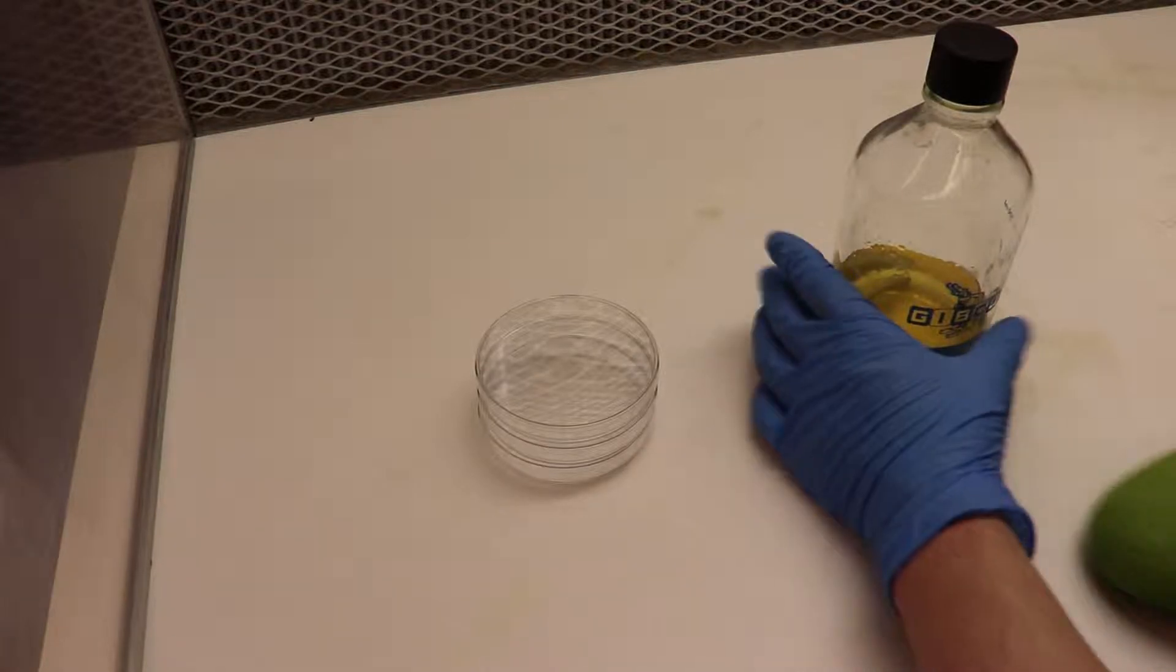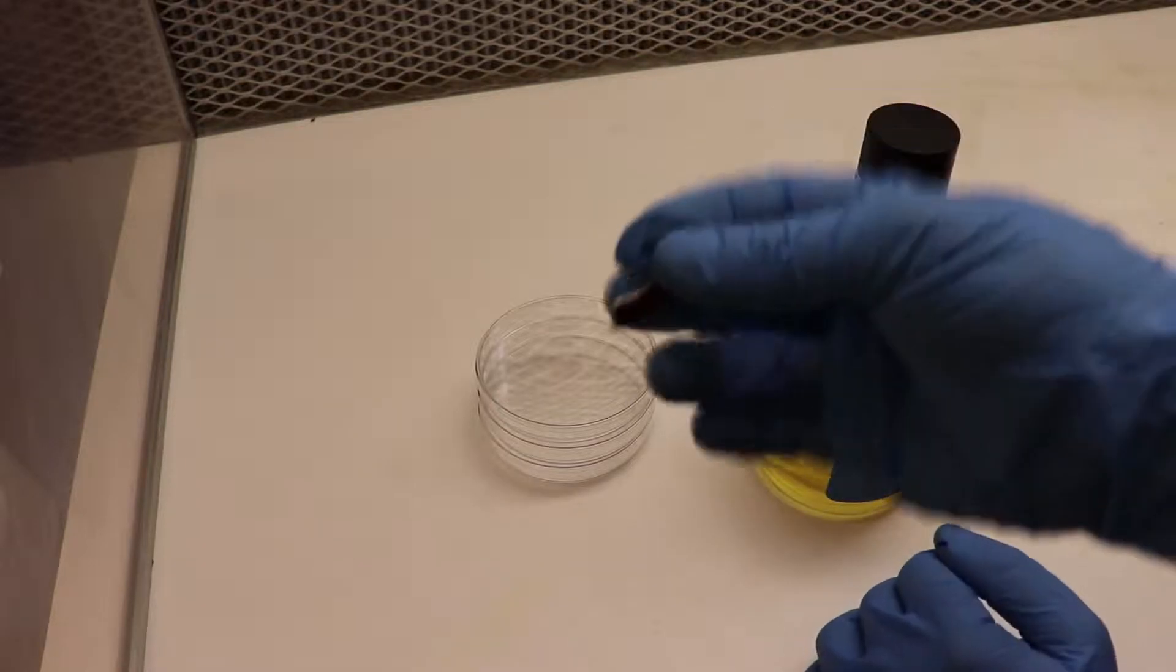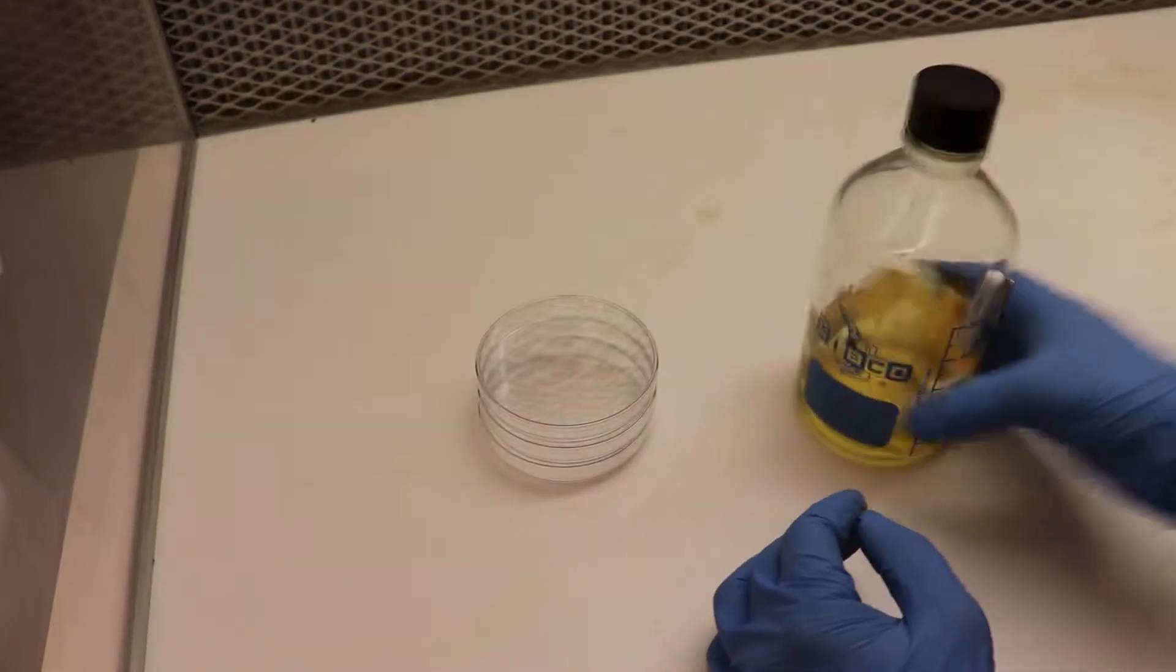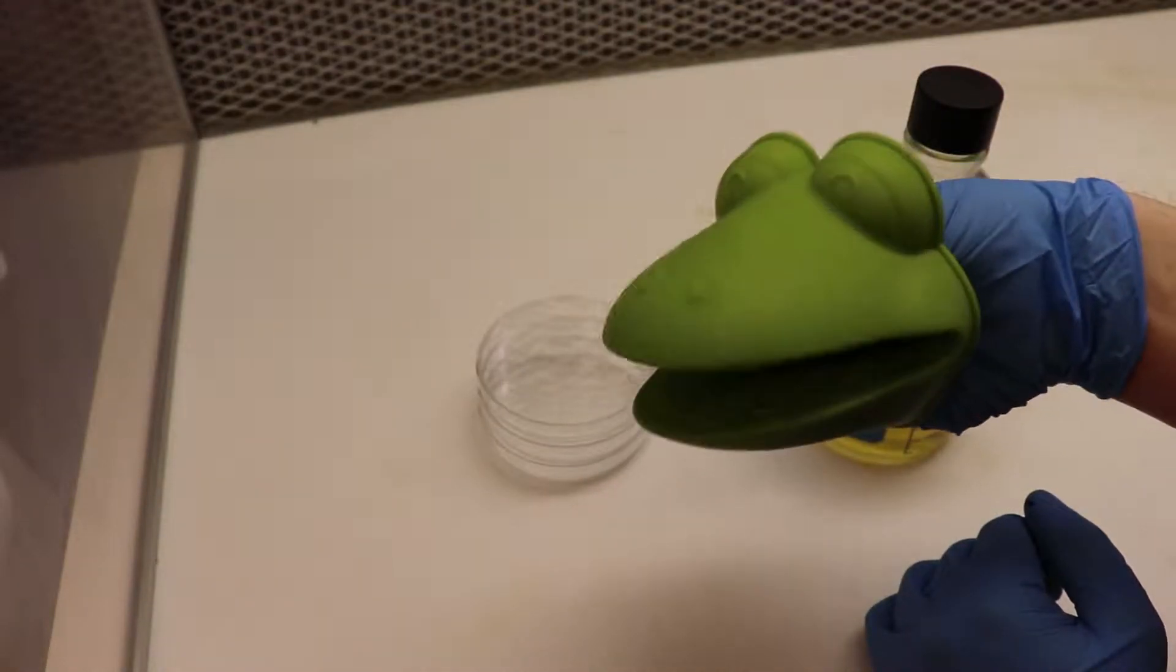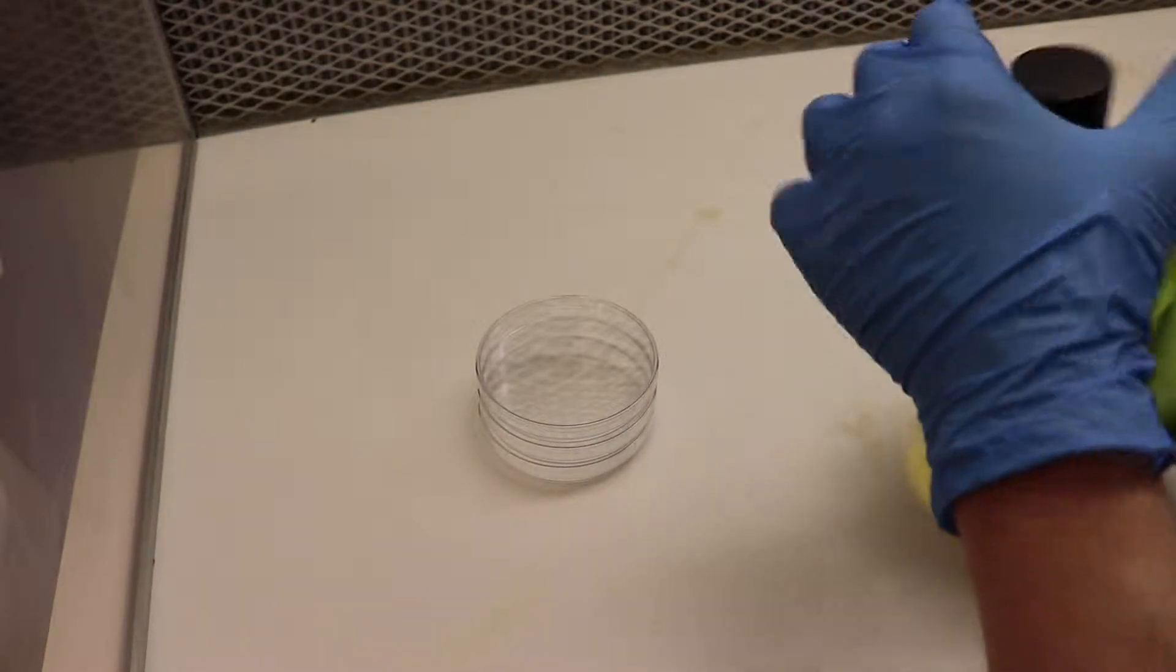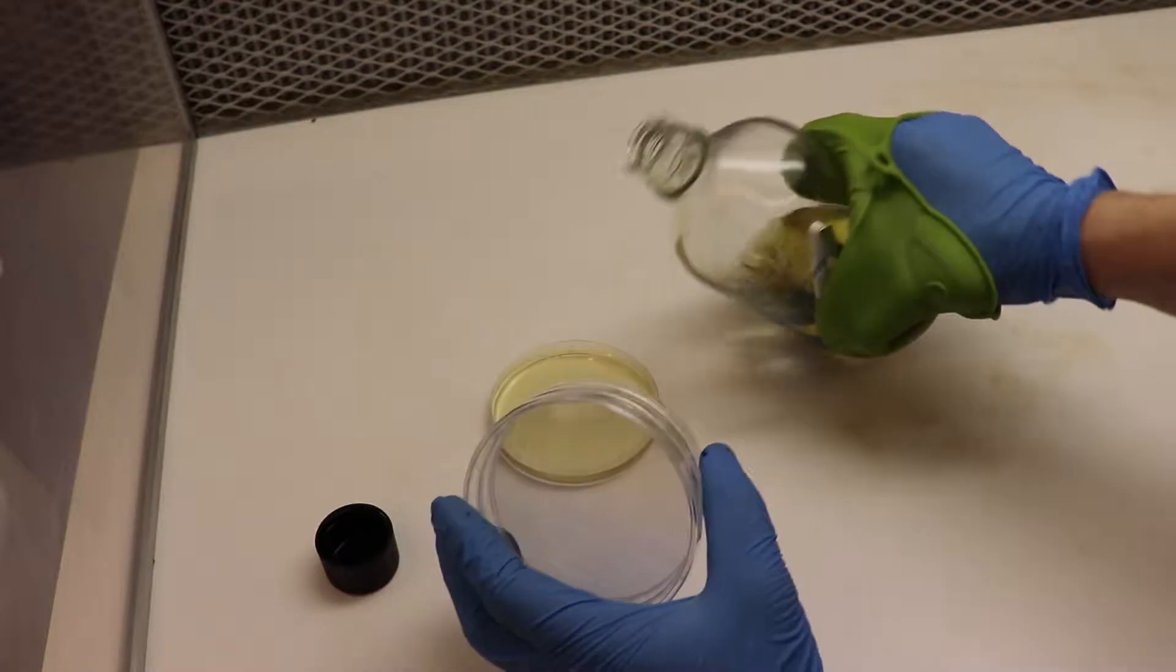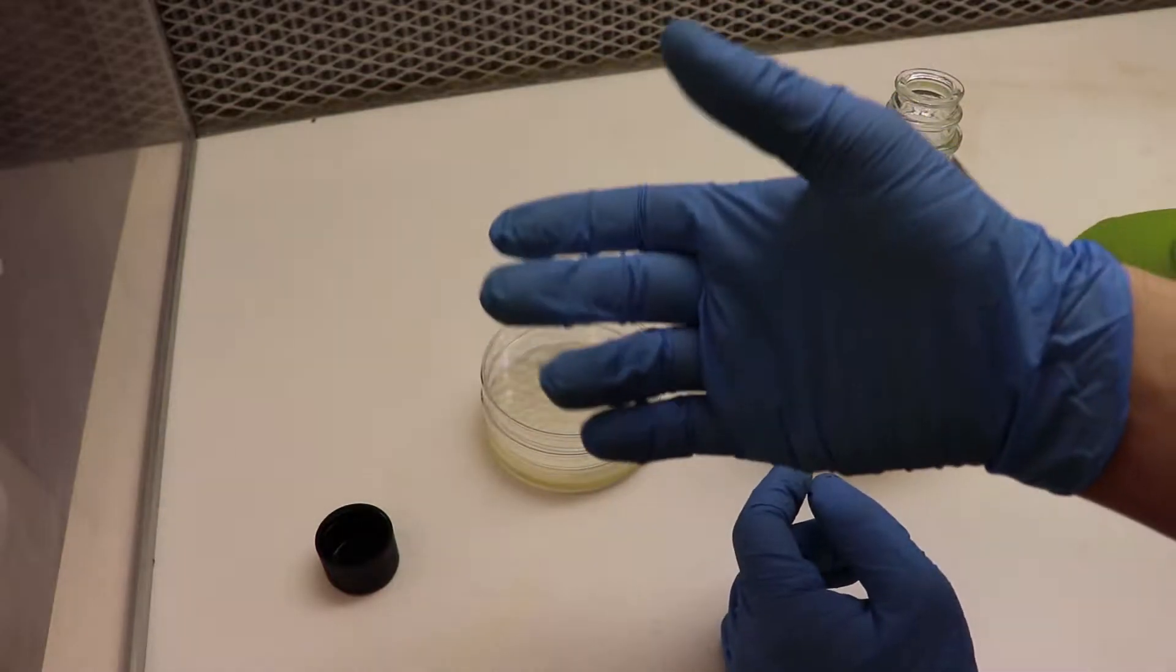And there we are guys. We're ready to pour. Get a magnet. This one was salvaged from a hard drive. Use it to hold your stir bar on the side. Get your friendly bottle holding pal. And pour your plates. I'm just going to use my bare hands.